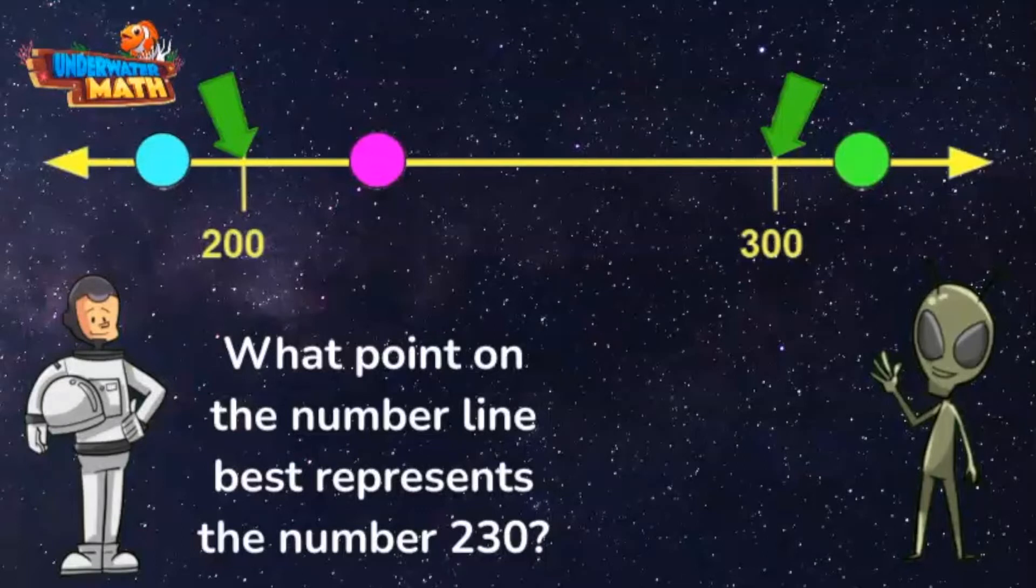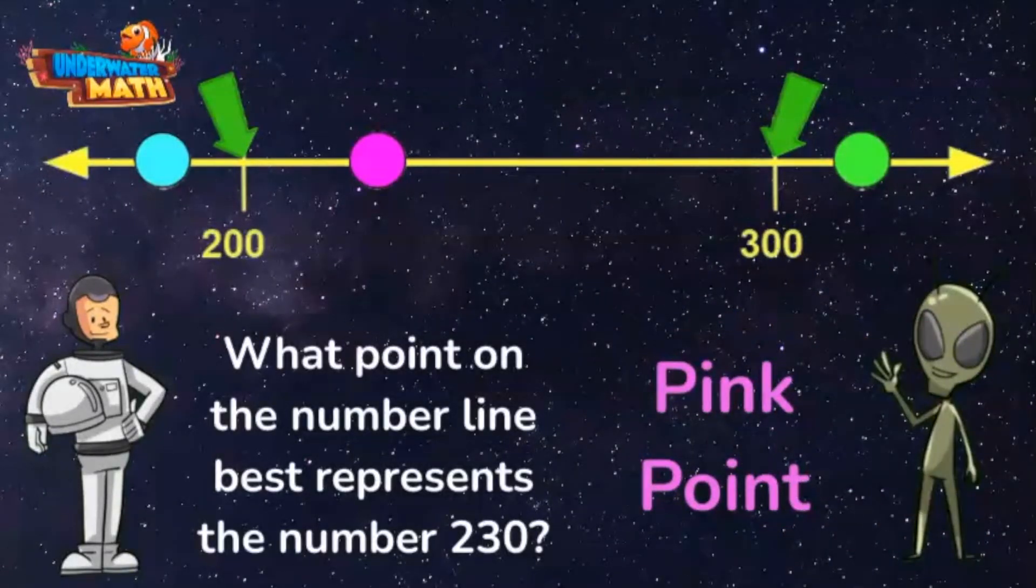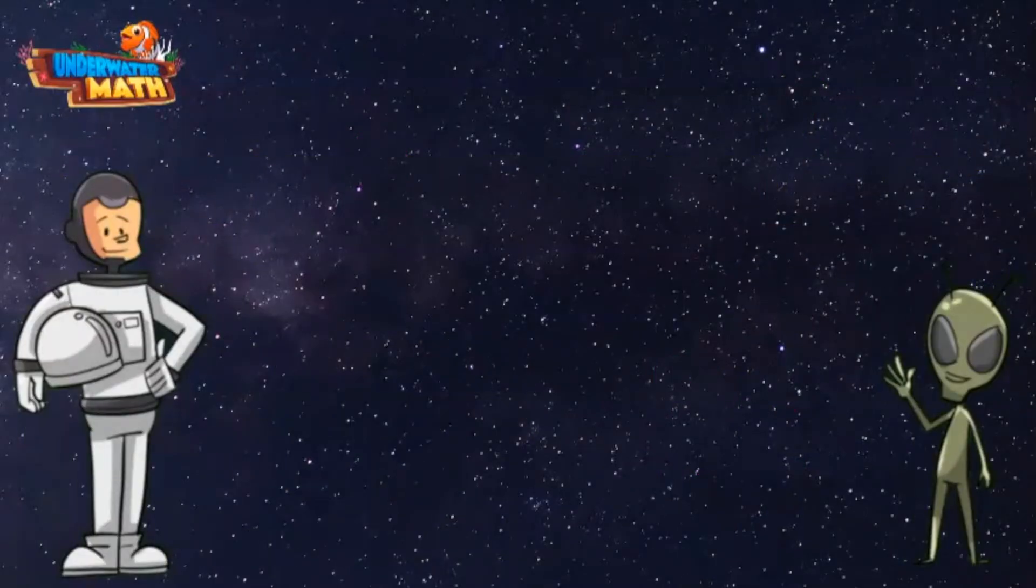The pink point is closer to 200 than to 300, which makes sense for 230. The pink point represents 230 on this number line. Great work! All right Lenny, give me another one.